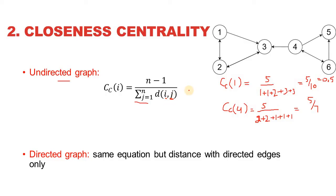If a node is connected to all other nodes in the network, it will have a distance of 1 from all of them, making the denominator equal to n minus 1, giving a maximum centrality value of 1. So degree still contributes to higher closeness centrality, but even a low-degree node can have high closeness centrality if all other nodes are generally close to it.